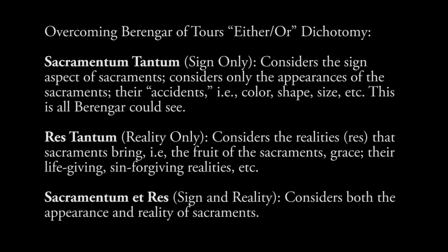The medievals develop a very important category under sacramentum tantum: accidents. An accident, to use this medieval vocabulary, refers to the color, the shape, the size of things — considerations of the signs of the sacrament. The accidents of the Eucharist would be bread and wine. Before consecration, we can refer to them as bread and wine and describe all the accidents. Res tantum just looks at the reality of the sacraments — it doesn't consider their signs or what's used. It just talks about the reality: the effects of grace, the fruits of the sacrament. In the Eucharist, it's the body of the risen Lord, the real presence. The res tantum is the essence of the sacrament.